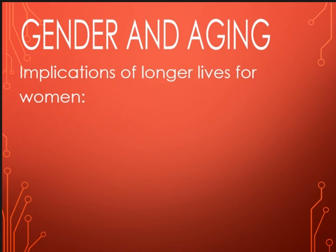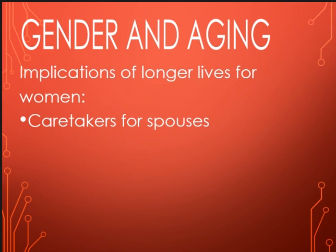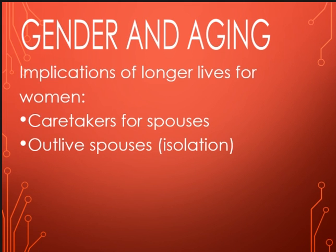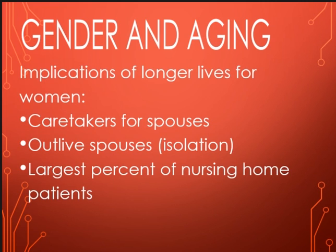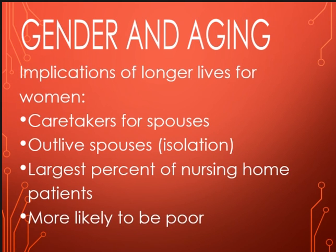Looking at gender and aging: women are living longer than men, and the implication is that they typically become caretakers for their spouses and outlive them. Once widowed, they usually experience quite a bit of isolation and make up the largest percentage of nursing home patients. They are also more likely to be poor. As you get older, you're not working — if you retire and lose your spouse, your healthcare expenses are a lot higher, so you're more likely to be living in poverty, especially the longer you live. If you're expected to retire at 65 and live to 80, that's 15 years you need to have planned for.